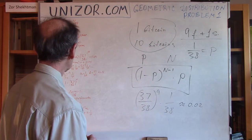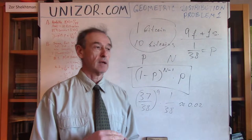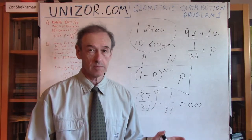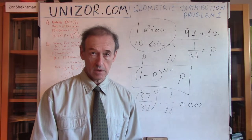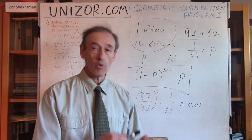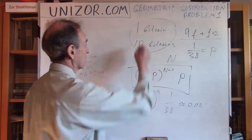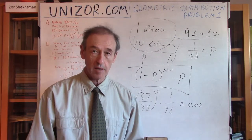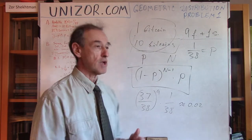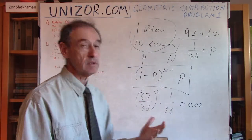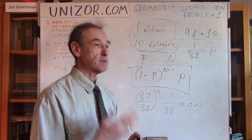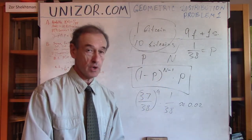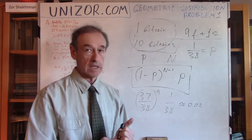Problem number 2 is a continuation of problem 1. In this case, I'm interested not just in winning on the 10th game, but just winning at all. I can win on the 1st, 2nd, 3rd game, etc., or on the 10th game. If I don't win on the 10th game I'm bankrupt — I only have 10 Bitcoins. So if the question is just to win, what's the probability? That's the probability of N equal to 1, or 2, or 3, up to 10.